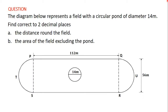Welcome back. In the previous video we solved the first part of this question, that is finding the distance around the field. We are going to consider the second part of the question in this video: the area of the field excluding the pond. So we are supposed to find the area of the field excluding the pond.